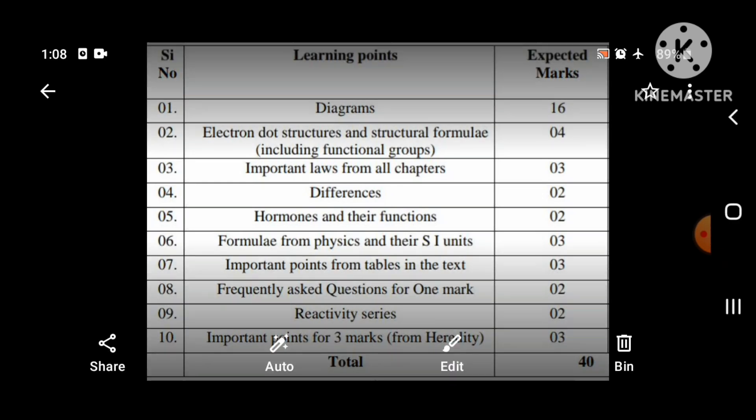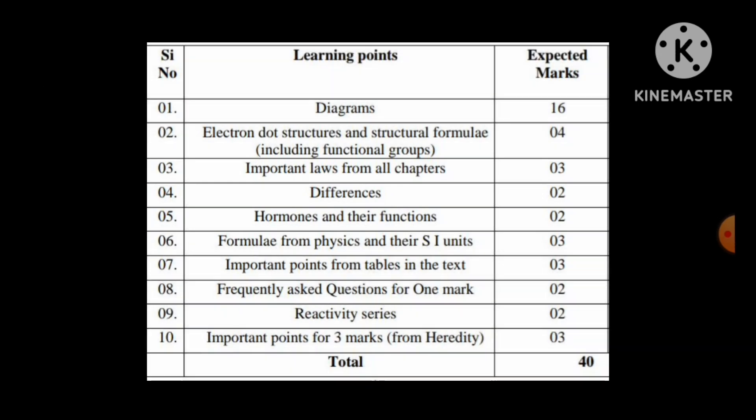Important points from tables in the textbook — which are repeated in your exams — I have provided in this scoring package series, and that is for three marks. Frequently asked questions on the reactivity series, such as which metal has high reactivity in the periodic table, is for two marks. Important points from the hereditary chapter are for three marks. So you can get 40 marks easily from this.